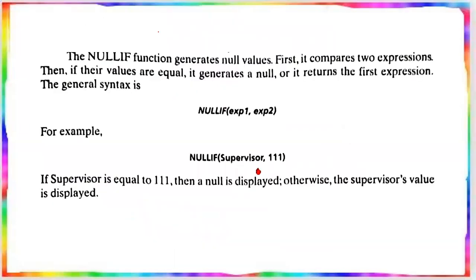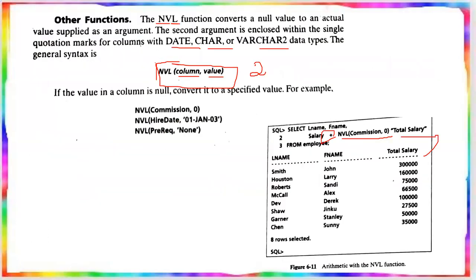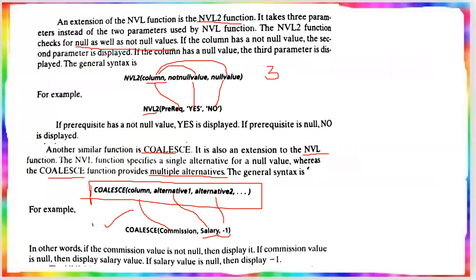The next function is the NULLIF function. NULLIF compares two expressions — if their values are equal, it returns null; otherwise, it returns the first expression. Syntax: NULLIF(expression1, expression2). For example, if supervisor equals 101, null is returned; otherwise the supervisor's value is displayed. These are different types of null-related functions: NVL, NVL2, COALESCE, and NULLIF.